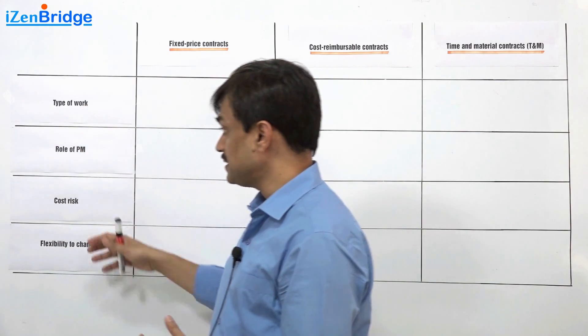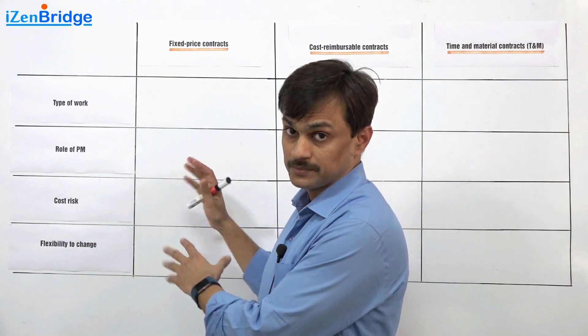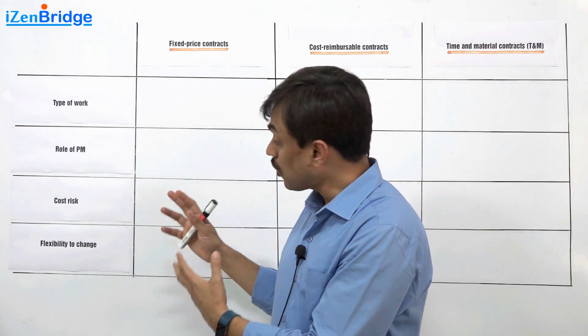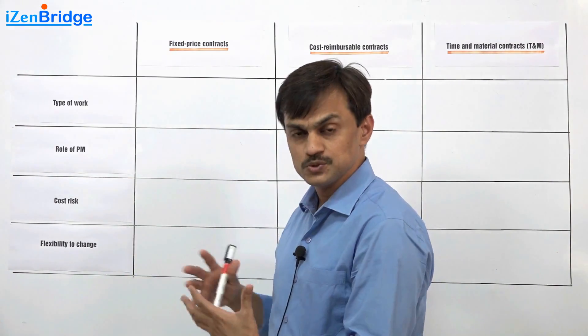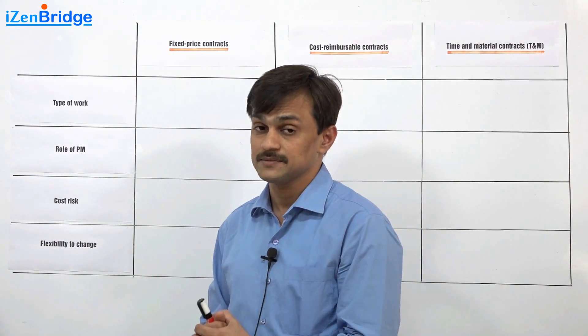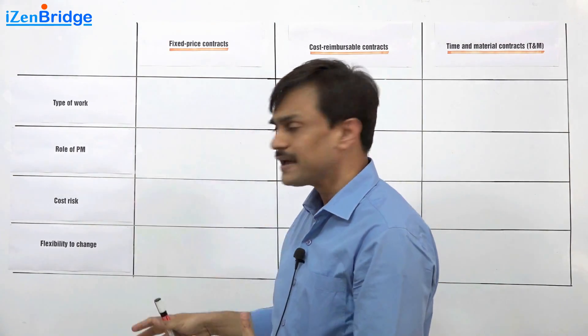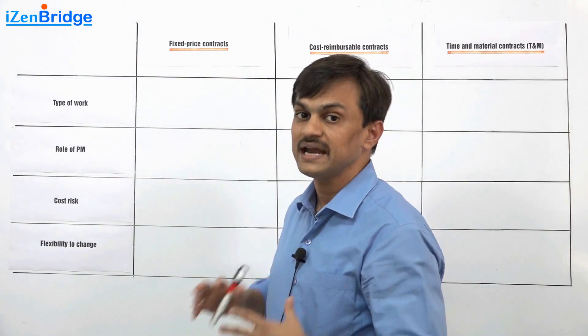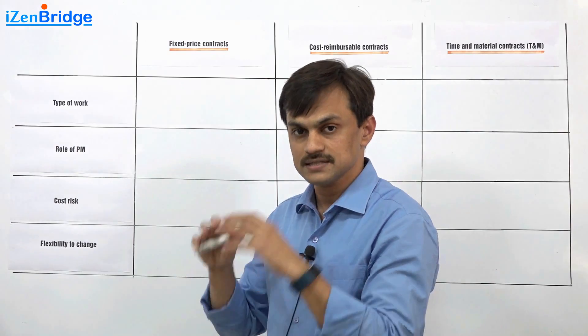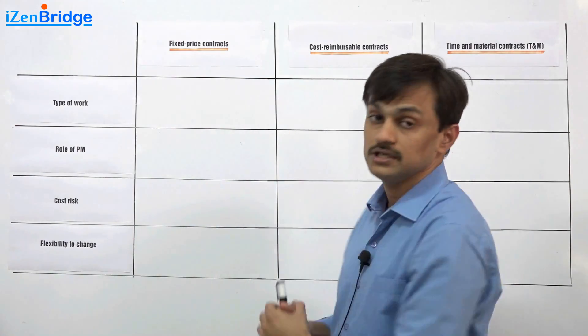And I am putting four parameters: what type of work is suitable for which type of contract, role of a project manager, the cost risk to a buyer, and flexibility to change. These are a few parameters, there could be many more. The idea is once we understand from these three, four dimensions it gives us an idea to compare these three contract types.